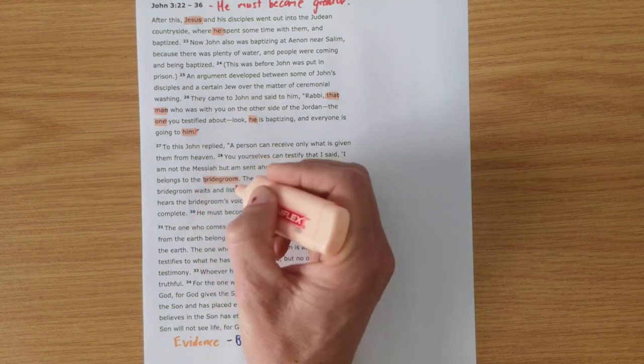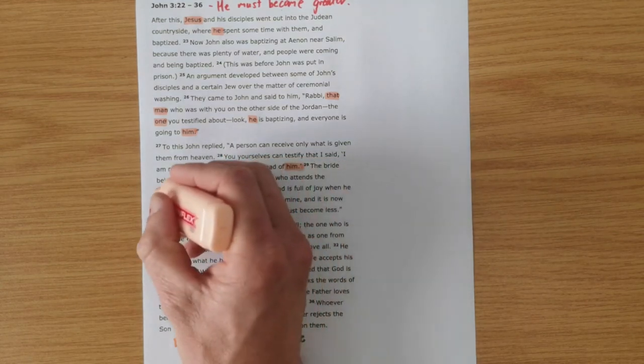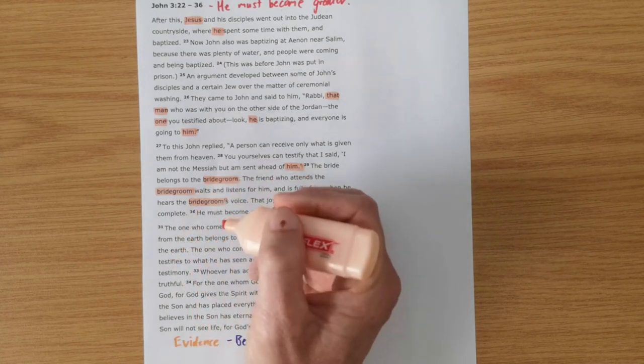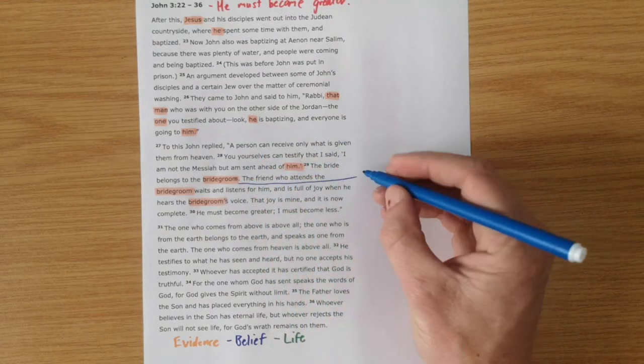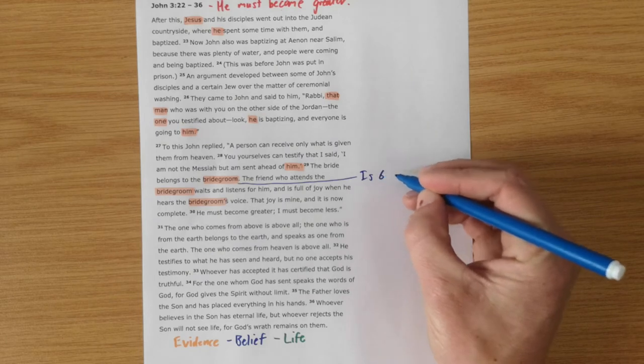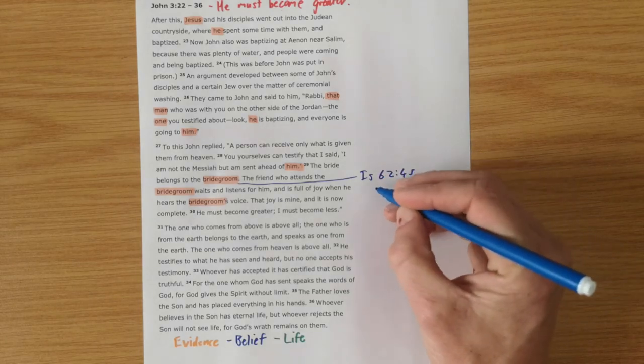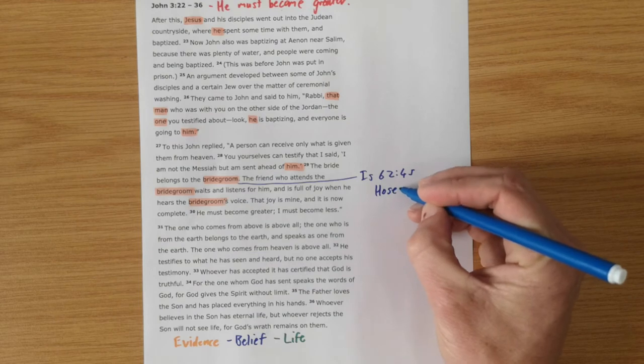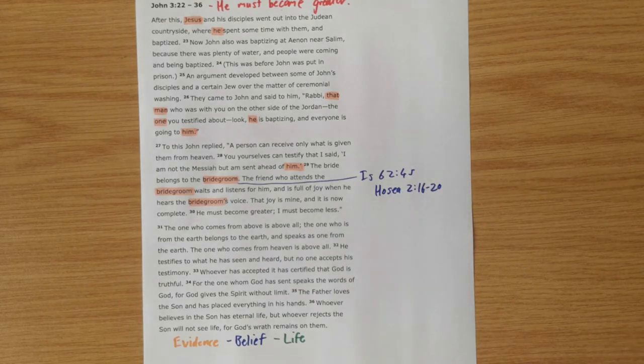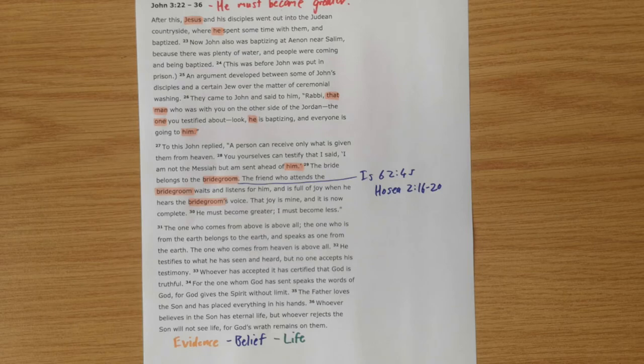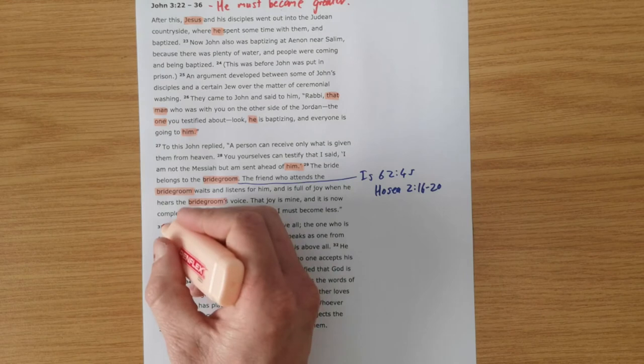He's spoken of in verse 29 as the bridegroom. And this is picking up on Old Testament prophecies where in a number of places, one of those being Isaiah 62 verse 4 and 5, Hosea 2 verse 16 to 20, God's people are spoken of as the bride of the Lord. And John is picking up on that idea and he's saying, the bridegroom is here. Those prophecies are about to be fulfilled.